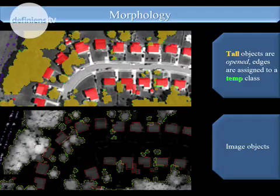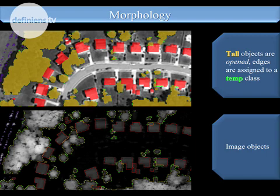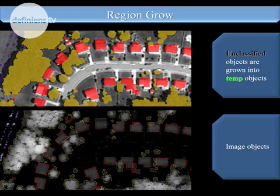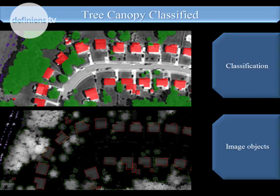The downside is that because I used a chessboard segmentation, I've got these square areas — and people say 'trees aren't square, what's going on?' So we run a morphology operation using the opening algorithm, filtering around using a very small circle. We assign these edge slivers of the tall objects to a temp class, then do an unclassified region grow into those. The end result is a much, much smoother, more realistic depiction of the tree canopy. We then free up that temporary tall class and assign it to a forest class.